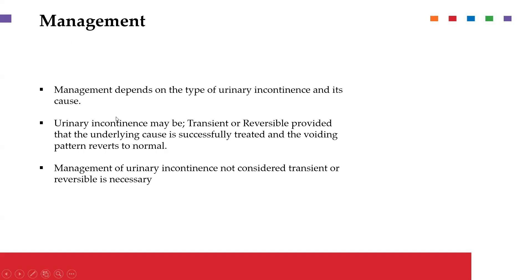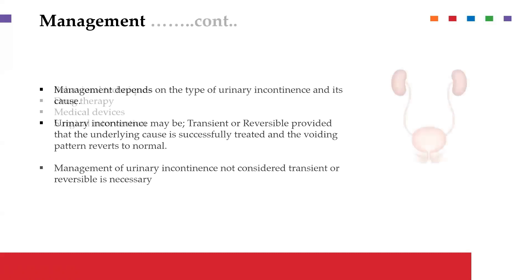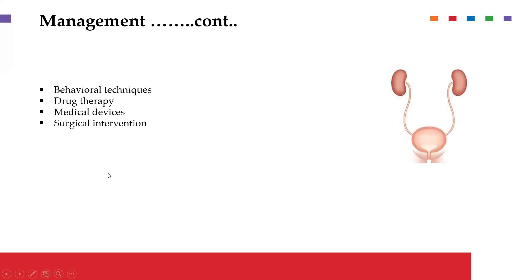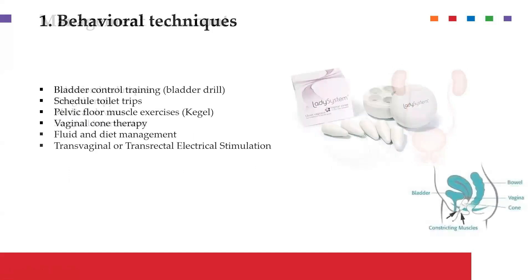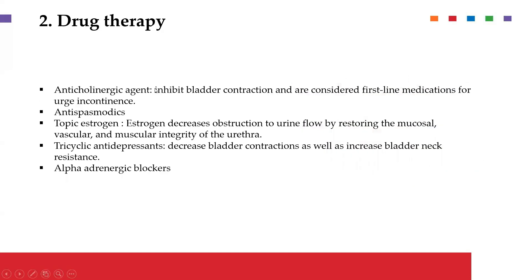Management depends on the cause. Urinary incontinence may be transient or reversible, lasting only a few days, but sometimes it is a persistent condition that is very hard to revert and requires other management approaches such as catheters. Management options include behavioral techniques, drug therapy, medical devices, and surgical intervention. Behavioral techniques include bladder drills, Kegel exercises, fluid and diet management, and scheduling toilet trips.